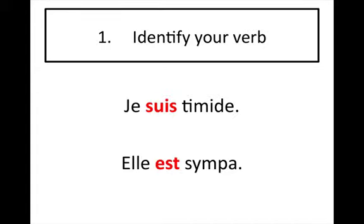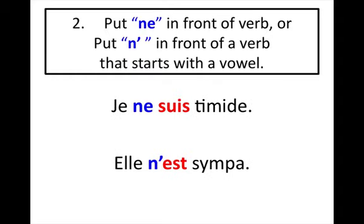The first step, you need to identify your verb. Second step, put ne in front of the verb. Or if the verb starts with a vowel, put an apostrophe.